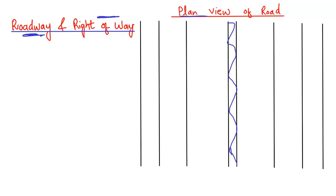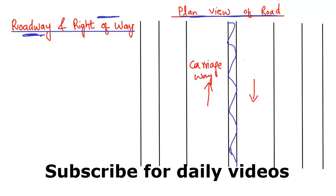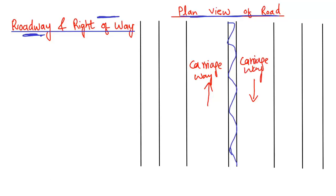This is the plan view of the road. Basically, traffic is moving in one direction in one lane, and traffic is moving in another direction in another lane. We call these the carriageways — this is one carriageway and this is another carriageway where traffic is moving in two different directions. The carriageway is the way where traffic is moving.